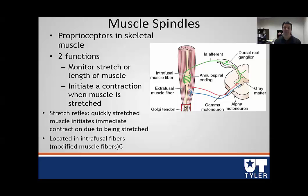In my example of the knee tap, we get a stretch in the muscle. The afferent neuron communicates with the alpha motor neuron, and that causes a contraction in the quad once we tap the tendon on the knee.